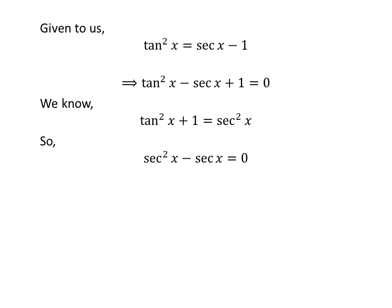In the above equation, we get sec²x minus sec x equals 0. Taking out the common factor sec x in the above equation gives us sec x times (sec x minus 1) equals 0.